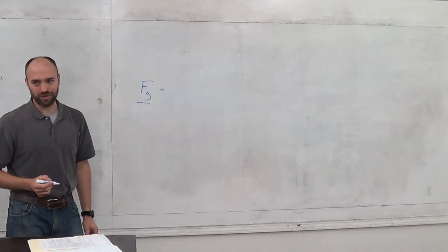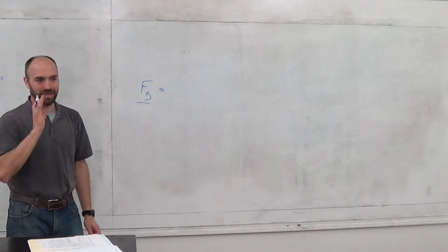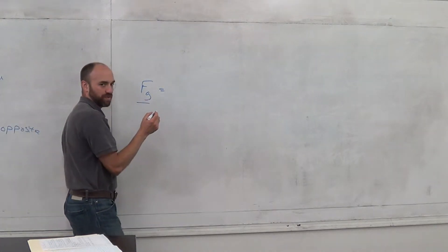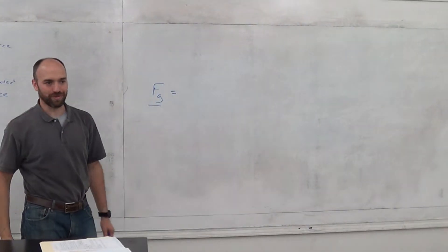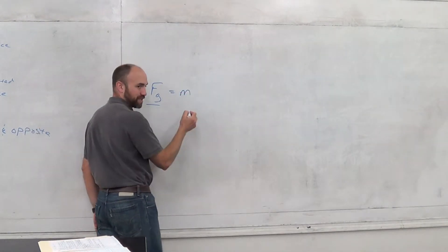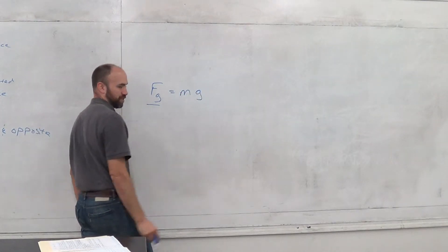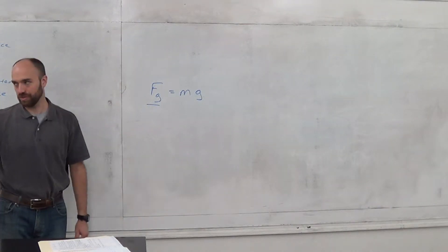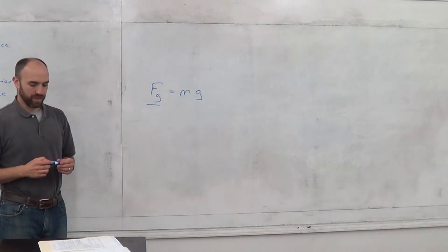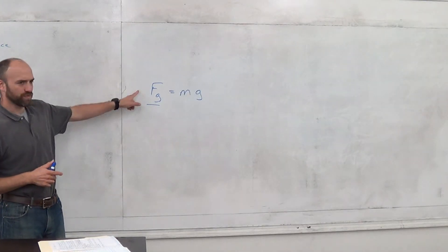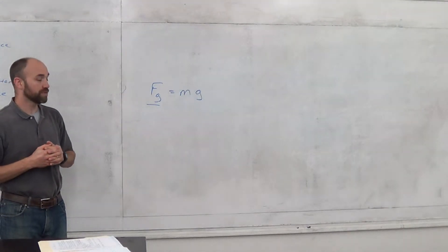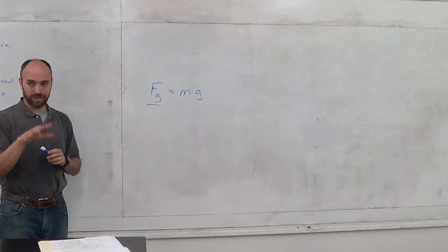Here's the equation for this. This is a shortcut equation. This only works on the surface of the earth within a hundred miles or so. This is mass, the mass of your object, times the acceleration rate of earth, which is 9.8432. The force of gravity is the mass of the object times the acceleration of the planet. Anything that has mass, gravity acts on it.